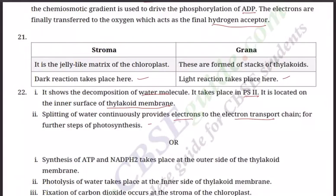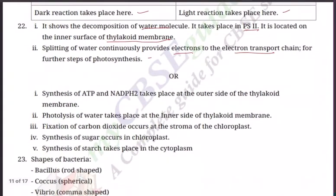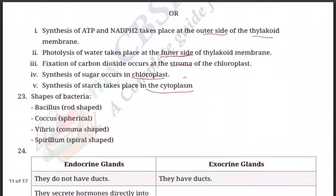There is a choice: The entire process of photosynthesis consists of a number of reactions — where in the cell does each take place? First, synthesis of ATP and NADH takes place on the outer side of the thylakoid membrane. Second, photolysis of water takes place on the inner side of the thylakoid membrane. Third, fixation of CO2 occurs in the stroma of the chloroplast. Fourth, synthesis of sugar molecules takes place in the chloroplast. Fifth, synthesis of starch takes place in the cytoplasm. These are very important questions.